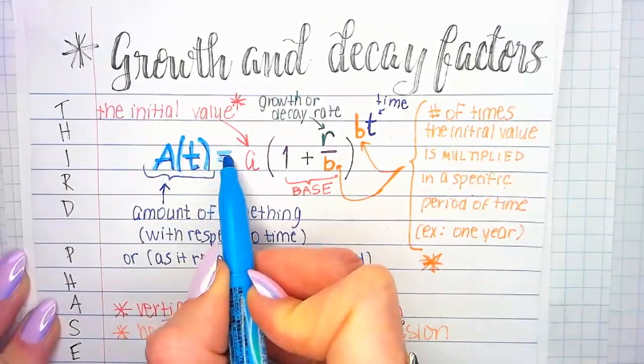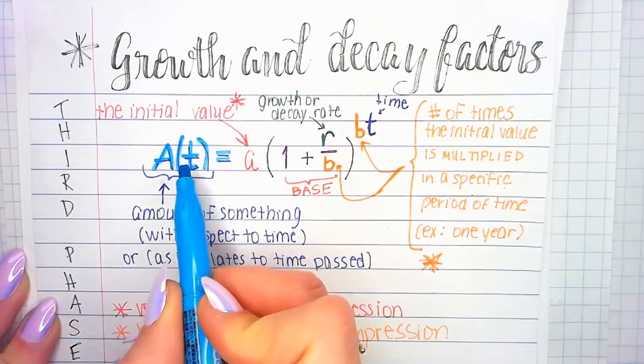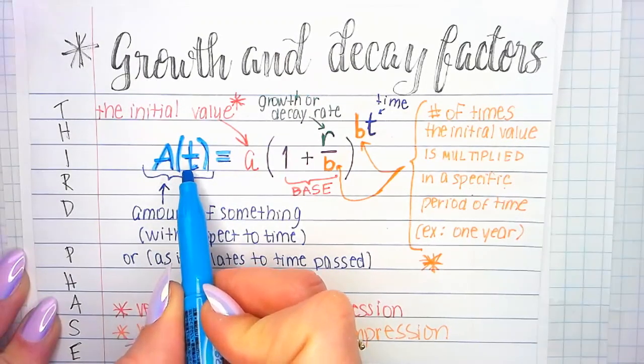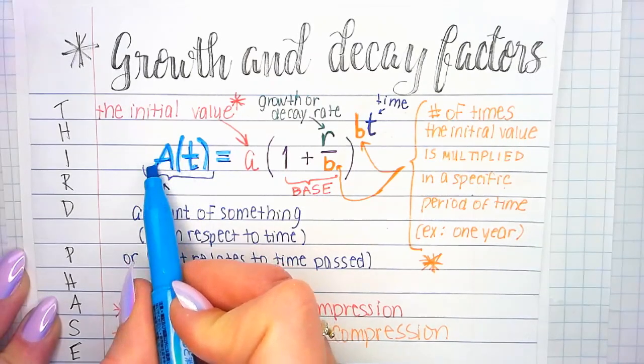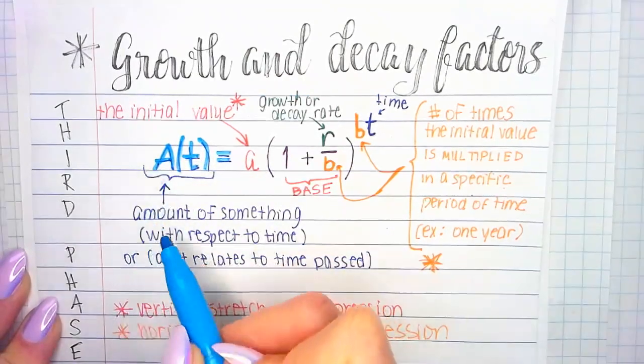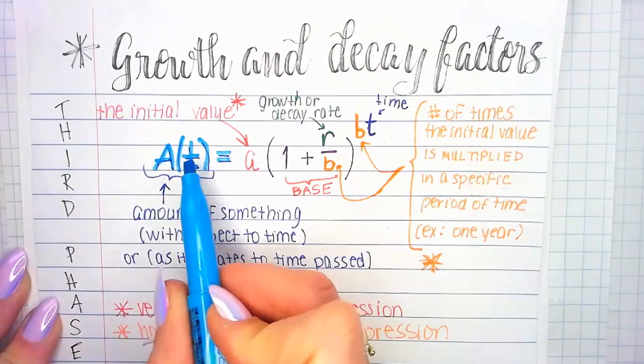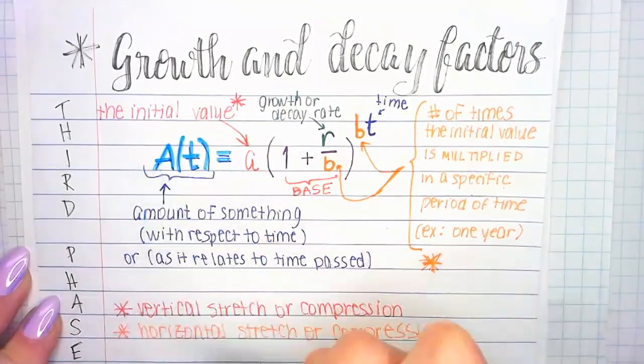Sometimes they use the phrase with respect to time. Maybe we'll refer to it as it relates to a certain amount of time that has passed. But more often than not, when we're doing these word problems, it's really going to relate to time. Number of days, months, years, whatever. So this is our output. A is really the output, but we refer to it as a whole package, A of T, meaning the amount as it refers to time or in reference to time.